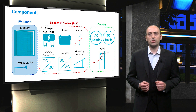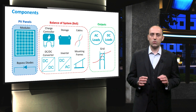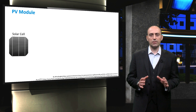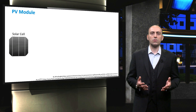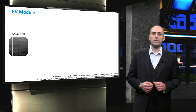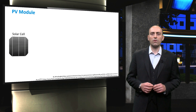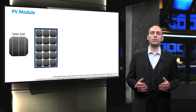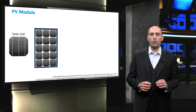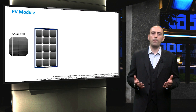We start with the generation part of the PV system, which are the solar cells. The task of a solar cell is to generate electricity. Using a single solar cell, however, is not practical for most applications. This is because a single solar cell delivers a limited amount of power under fixed current and voltage conditions. In order to use solar electricity in practice, a number of solar cells have to be connected together to form a solar module or PV module.